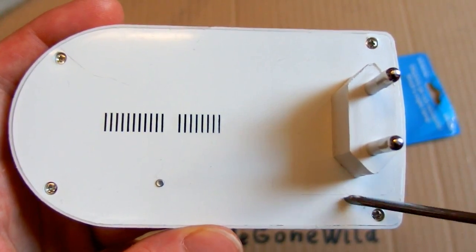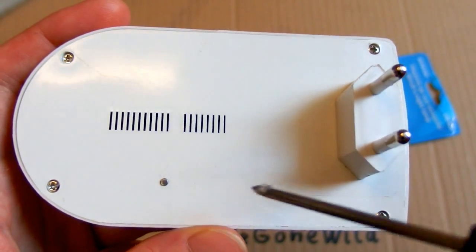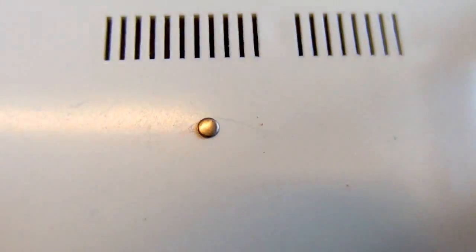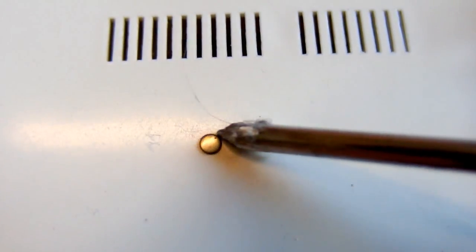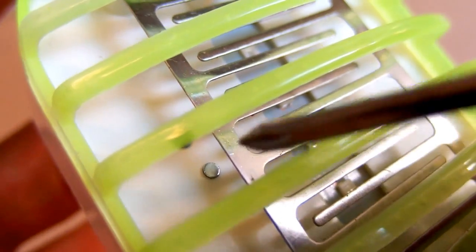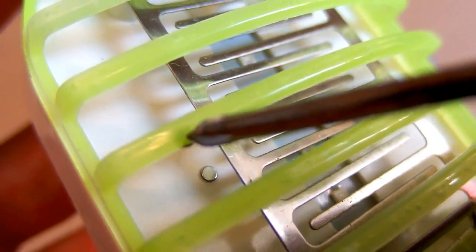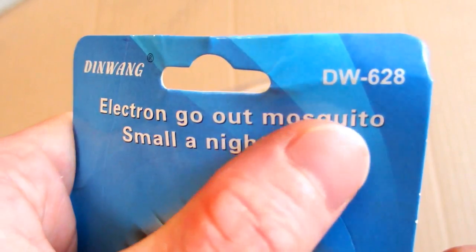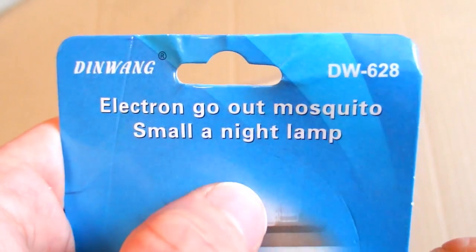It has four screws in it and what's this? Some piece of metal. Strange. There are other such pieces of metal here and here and by the way it's called Electron go out mosquito. Small nightlamp.